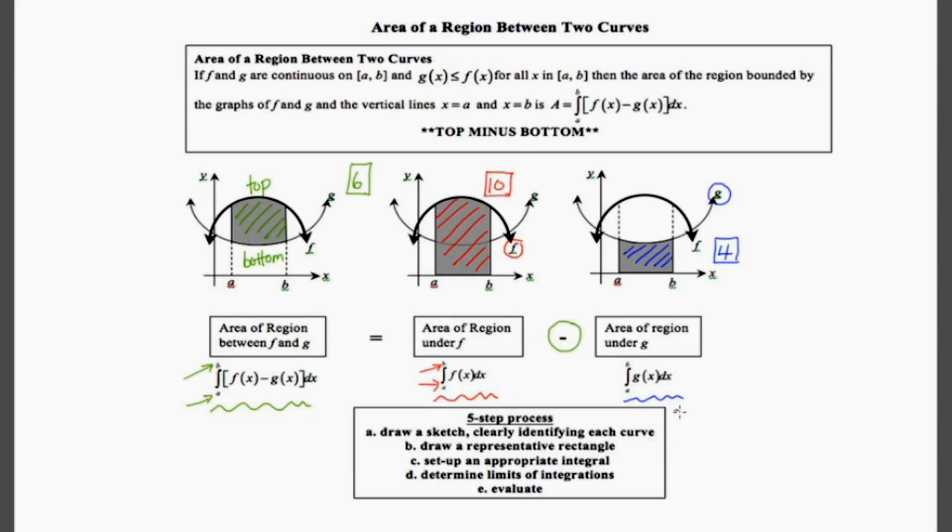Now below, I've outlined a five step process for solving problems like this. The first is to draw a sketch, clearly identifying each curve, and really getting a sense of which curve is on the top and which curve is on the bottom.